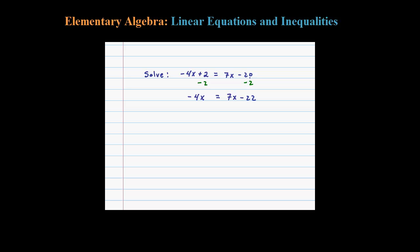Okay, so we've combined the constant terms. Now we want to combine the x terms here. When there's nothing in front it's really a plus, so we're going to subtract 7x on both sides.